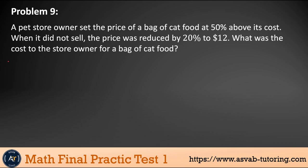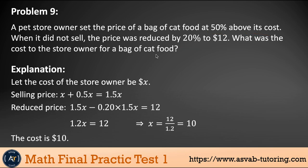Next problem: Make sure that you read the question carefully before you attempt to solving it. A pet store owner set the price of a cat food at 50% above its cost. When it did not sell, the price was reduced by 20% to $12. What was the cost of the store owner for a bag of cat food? This is a very important question. You might see this question many times in the test in different versions. Let's do that. Say like the original owner's cost was x dollars. Selling price equals original price plus profit, so 50% profit here. X plus 0.5 gives you 1.5x.